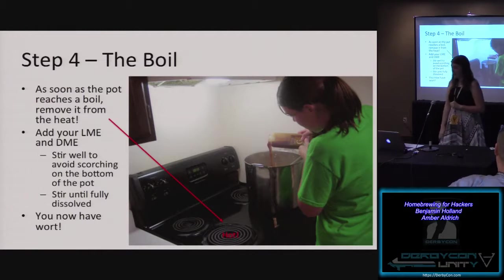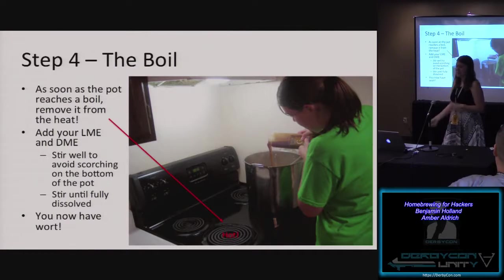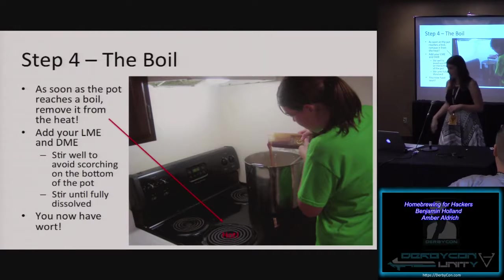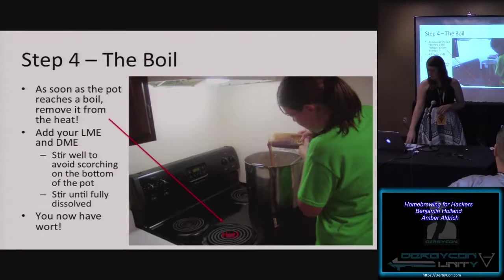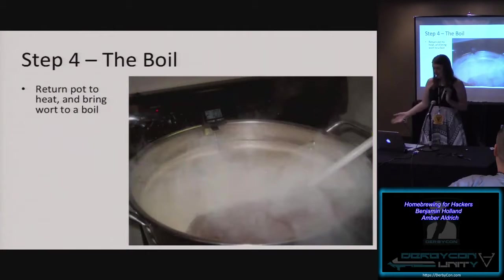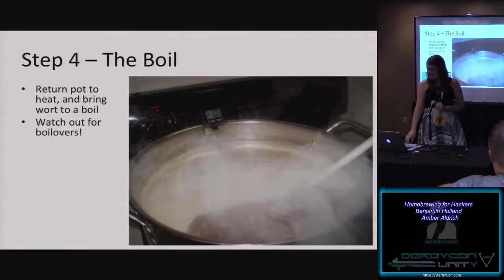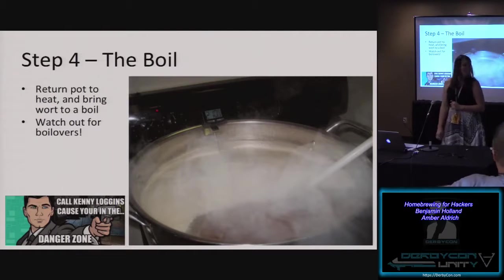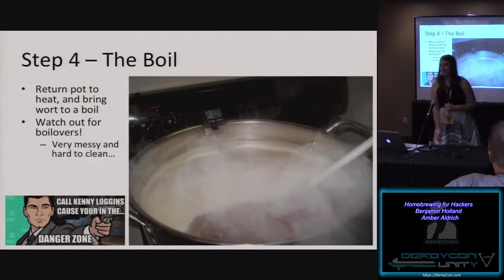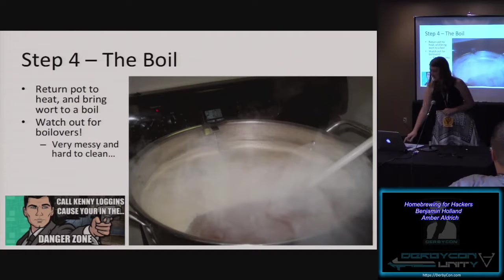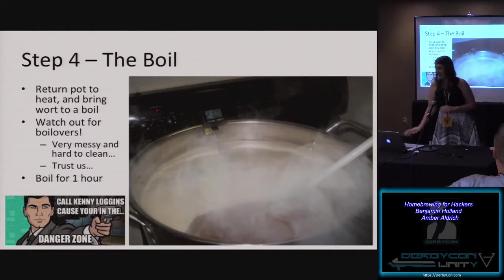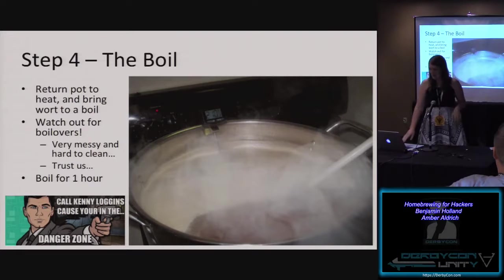Take the pot off the burner before you dump the liquid malt in so you don't scorch it on the bottom. It's a good idea to have one person stirring and the other person pouring. At this point you have a wort. Now we boil it — this is what we call the danger zone because we've let it boil over a couple times. It happens really really fast and it's a mess to clean up, so keep an eye on it for the first half; it calms down after that.